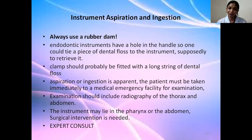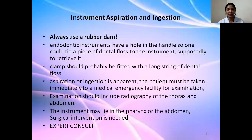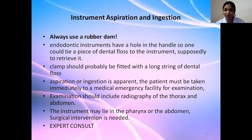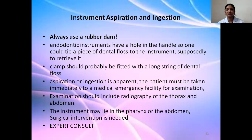Instrument aspiration and ingestion: use a rubber dam. Most hand instruments and rotary instruments have a small hole in the handle through which dental floss can be placed to retrieve the file; clamps should also be tied with floss. If aspiration occurs, it is a medical emergency — take the patient immediately for examination, take an X-ray, and locate the foreign body or file. If surgical removal is needed, consult an expert.